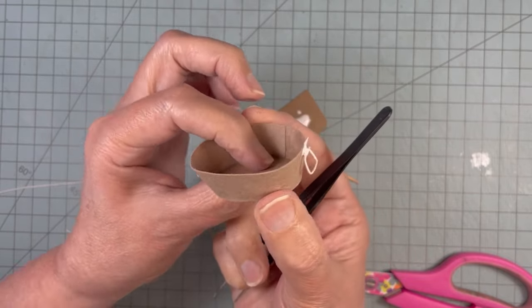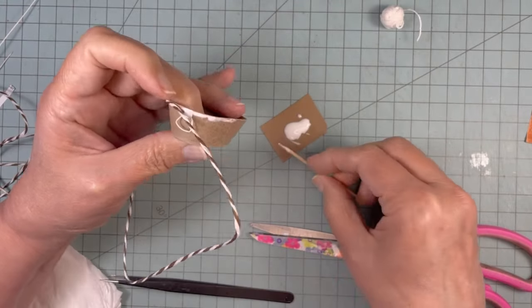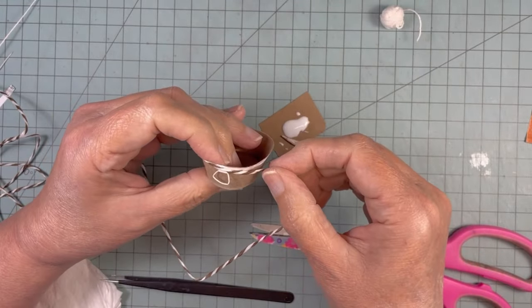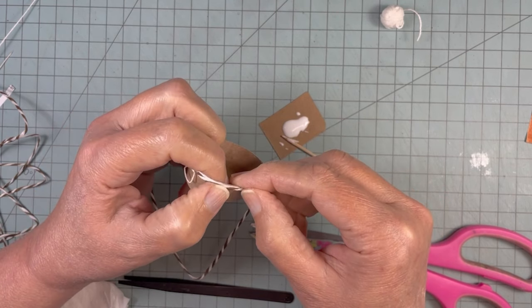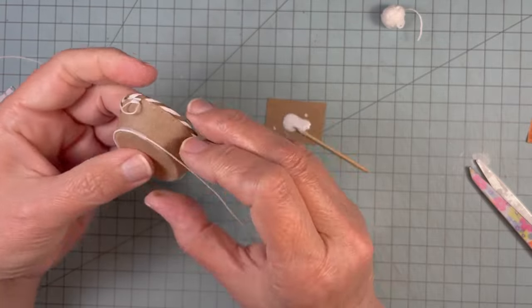I don't know what this cording is. Because it's something I had back from scrapbooking days but it's like a paper twine. I'm gluing it around the edge to give it that rolled look that tubs have.